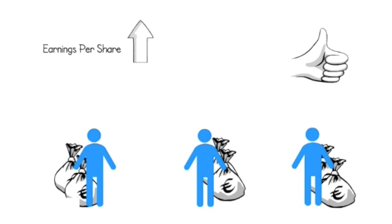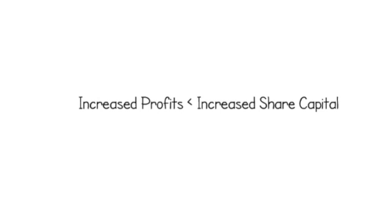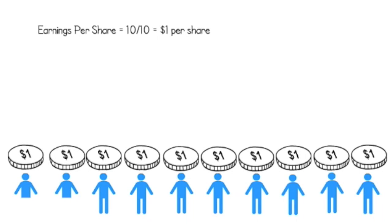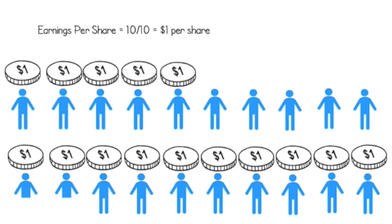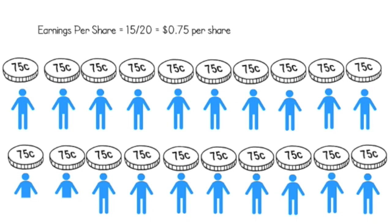But this is not always the case. A business's earnings per share ratio can still decrease when there is a positive increase in profitability, where increases in profits are insufficient to meet additional share capital. For example, if a business had a profit of $10 and 10 ordinary shares, then the earnings per share is $1 per ordinary share. If the profit increases from $10 to $15, but there was an additional share issue of 10 shares, then the earnings per share would decrease by $0.75 per ordinary share.